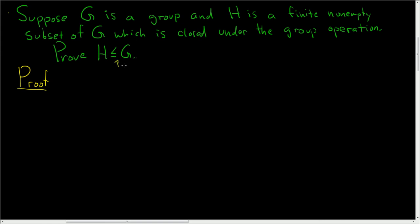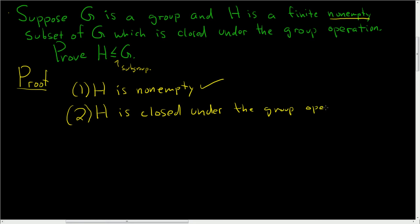So we have to prove that H is a subgroup of G. So the first thing we have to show is that H is non-empty. But that's one of our assumptions, right? It's a non-empty subset, so that part is done. Two. H is closed under the group operation. But again, that's one of our hypotheses, so it's closed under the group operation, so that part is done.